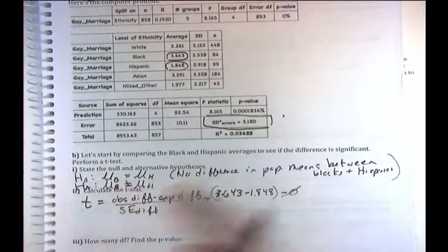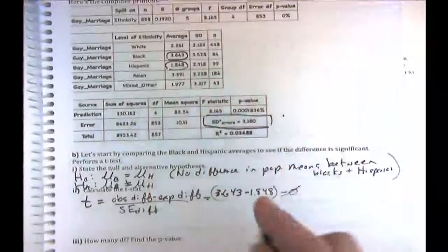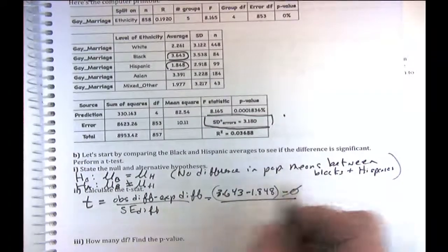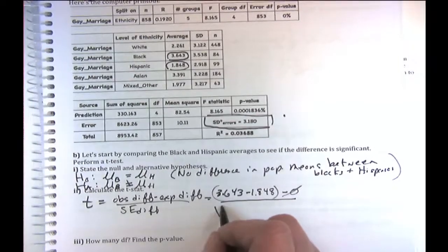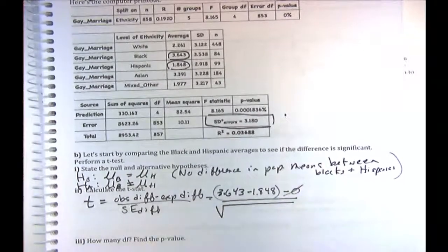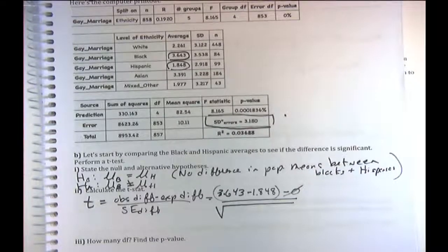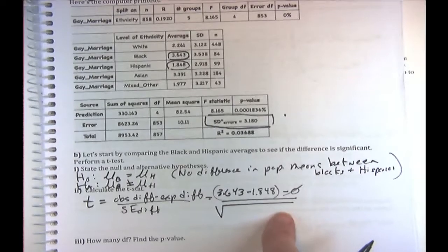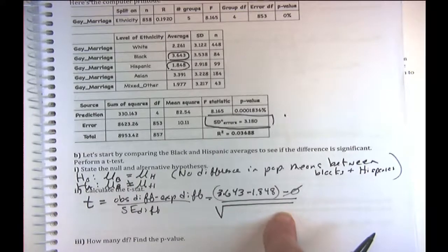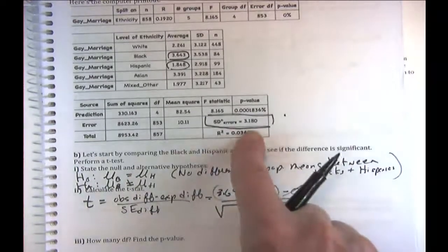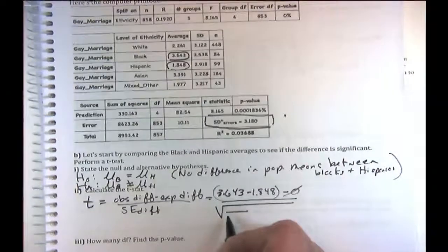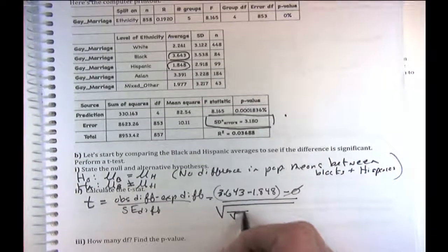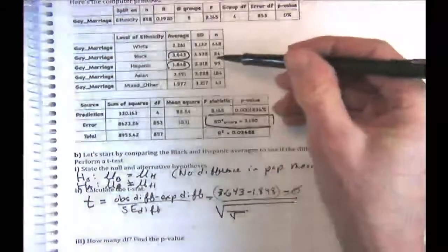The p-values in the printout are so large for some comparisons because the Z-score is small, like 1.257, but they're all multiplied by 10. If after multiplying it goes over 100%, they just write 100%. The Bonferroni method adjusts the p-value by multiplying by the number of pairwise comparisons to avoid cherry-picking.